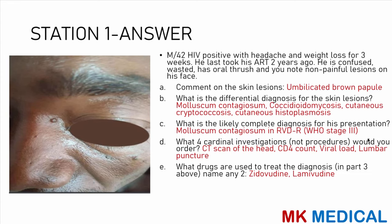So most likely these lesions here, as you can see, this one here looks umbilicated right on the center. They are dome-shaped papules — so they are umbilicated, dome-shaped brown papules. The differential diagnosis is molluscum contagiosum, coccidioidomycosis, cutaneous cryptococcosis, and even cutaneous histoplasmosis.